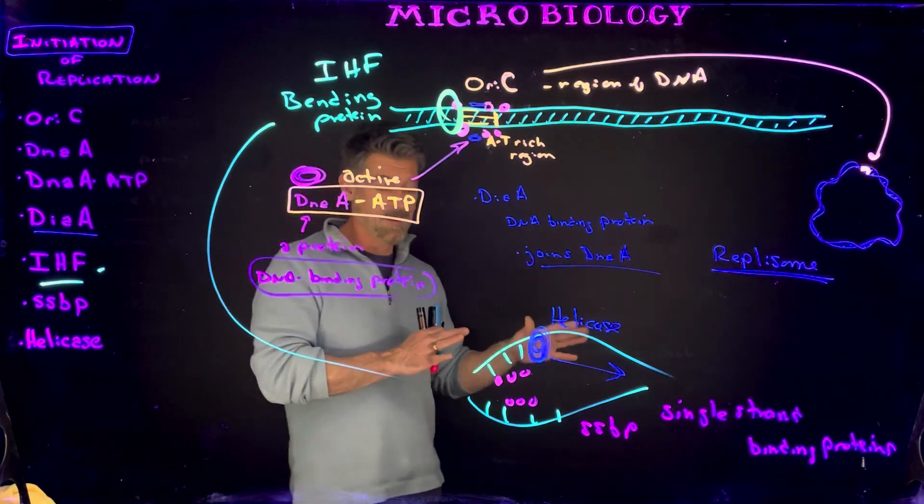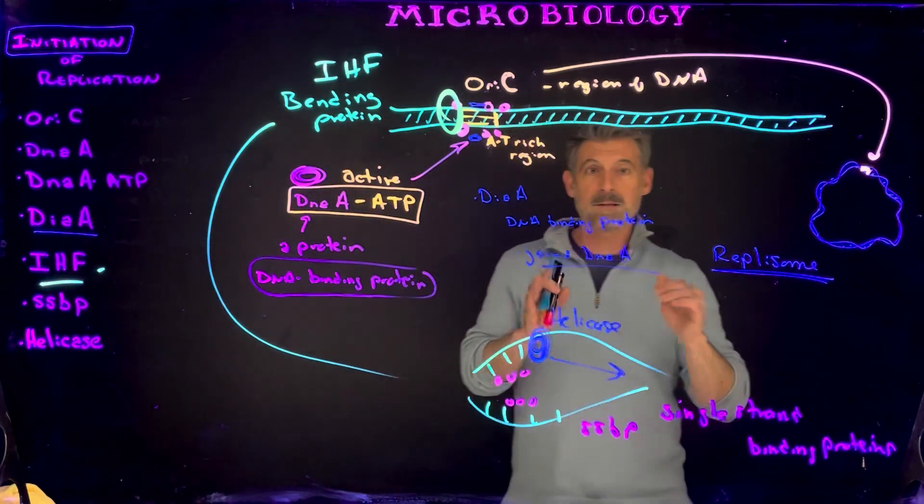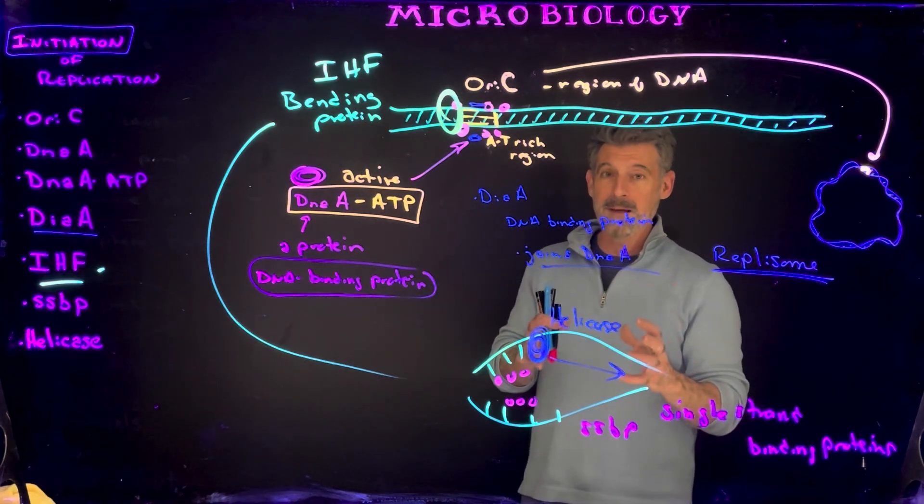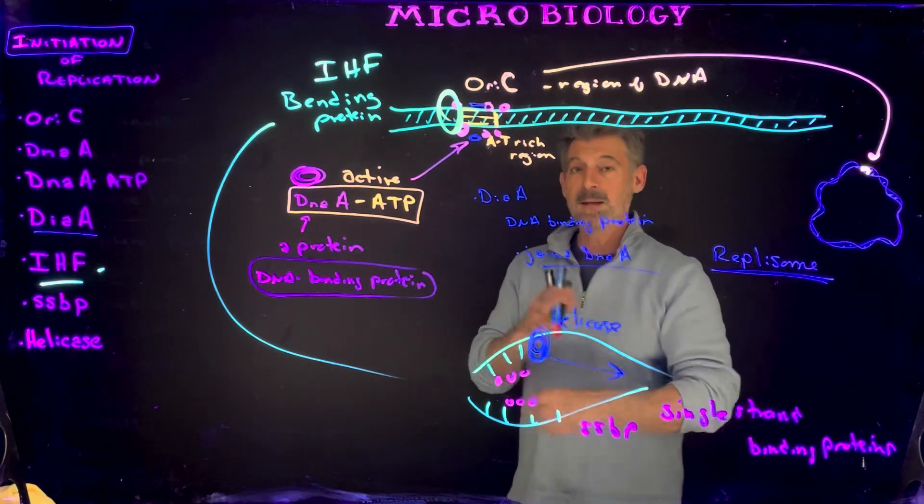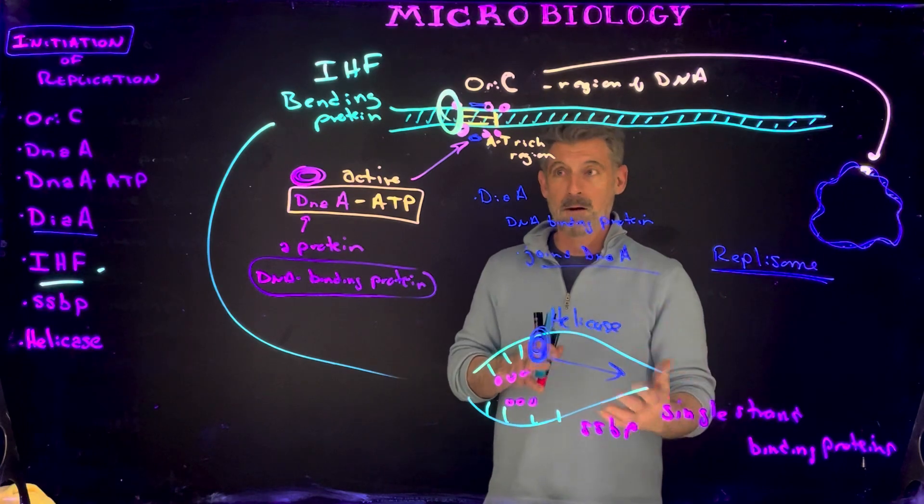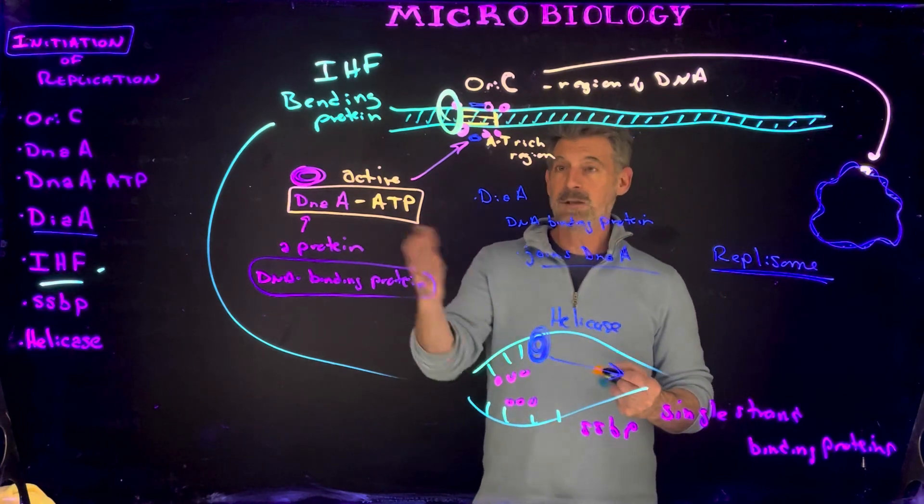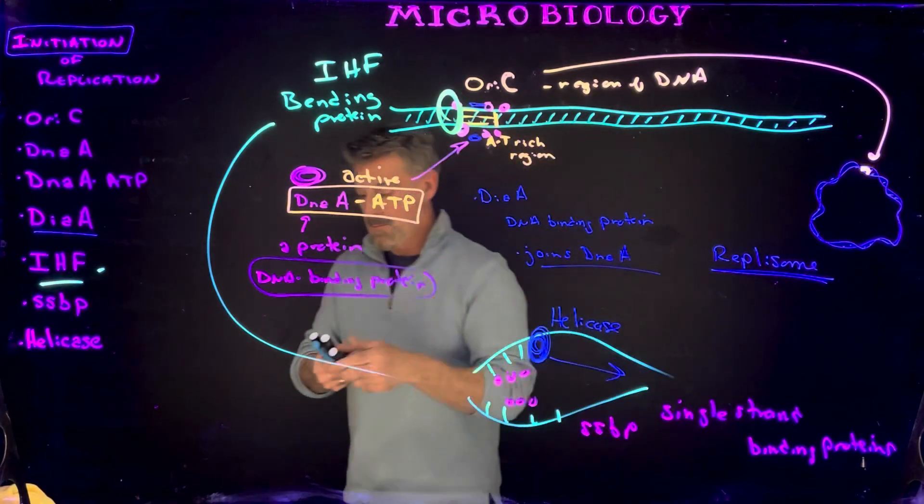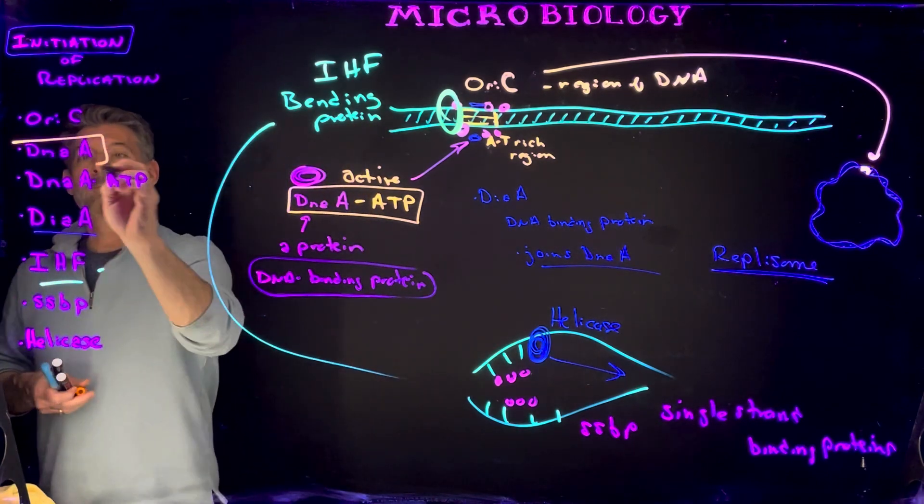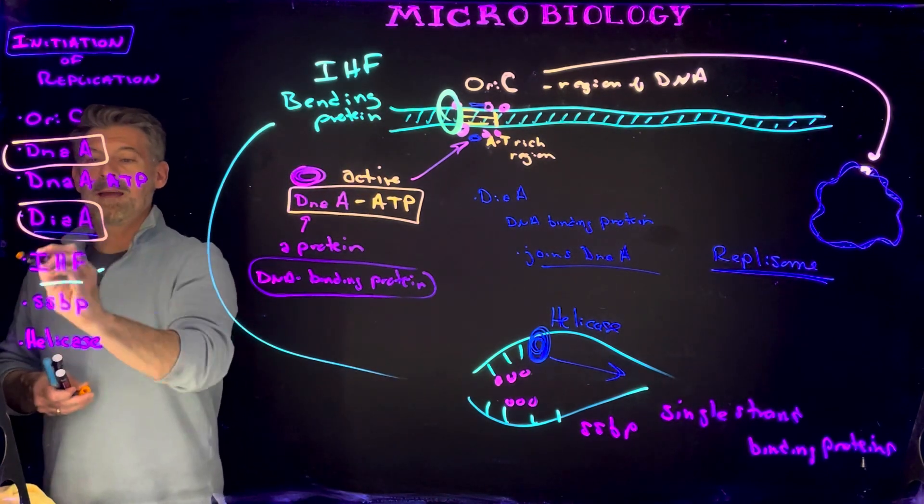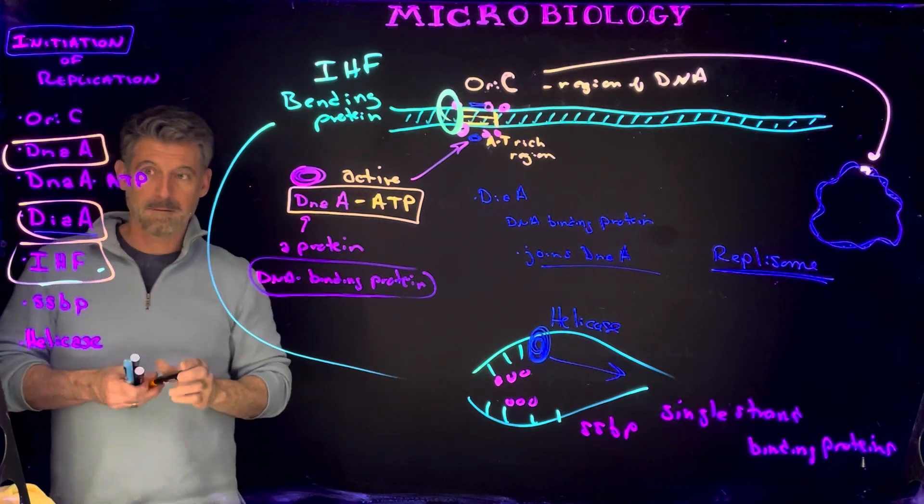So as you're studying DNA replication, that's where all those will come in. This is the beginning of that process. So before all that begins, before we get the primase and the DNA polymerase working and all those other things, we have to initiate the process. And so the key molecules to take away here are the DnaA, the DiaA, and the IHF in particular.